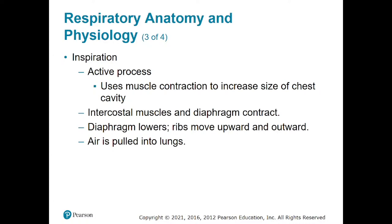The intercostal muscles and the diaphragm contract. The diaphragm goes lower. The ribs move up and outward — this is all due to muscle contraction. During this process, air is able to flow into the lungs with very little effort. There is still some effort our body needs to expend, but the majority has been made far easier by the contraction of the diaphragm and the intercostal muscles.